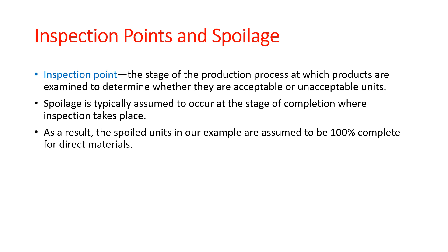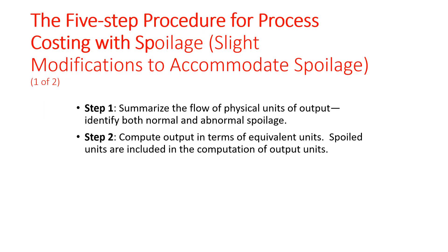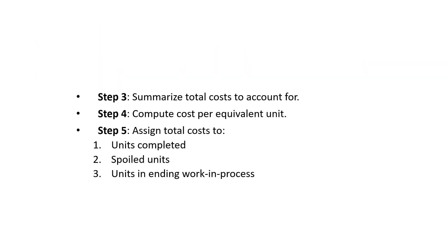There are five-step procedures for process costing spoilage. Step 1: summarize the flow of physical units of output, identifying both normal and abnormal spoilage. Step 2: compute output in terms of equivalent units — spoilage units are included in the computation. Step 3: summarize total cost to account for. Step 4: compute cost per equivalent unit. Step 5: assign total cost to the units completed, the spoiled units, and the units in ending work-in-process.